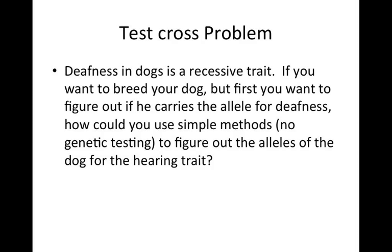If you haven't already worked this question out, you'll want to pause now because I'm about to go through the answer for this. What I always like to do when I start working out a problem is to just write out what I know. So we know that A, that hearing is dominant and deafness is recessive.